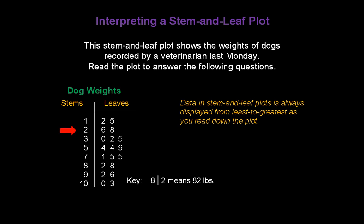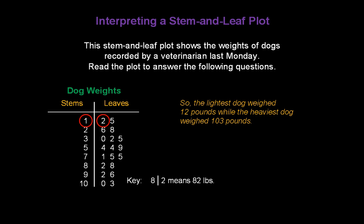Data in stem-and-leaf plots is always displayed from least to greatest as you read down the plot. So the lightest dog weighed 12 pounds while the heaviest dog weighed 103 pounds.